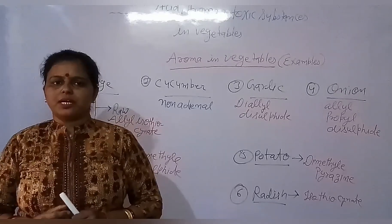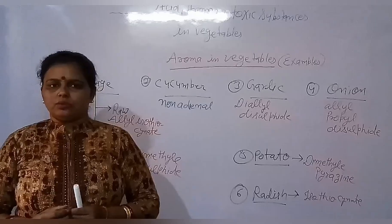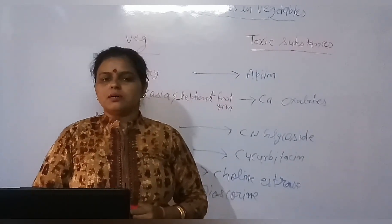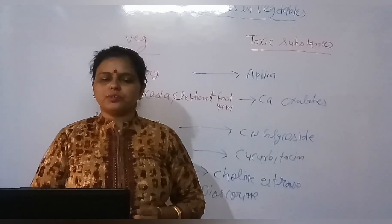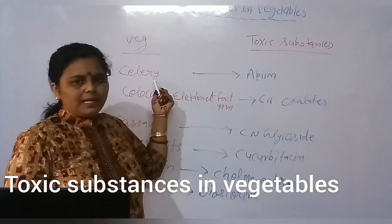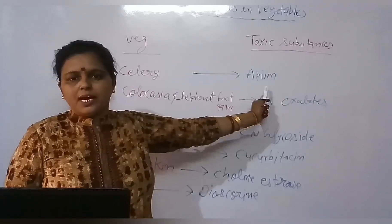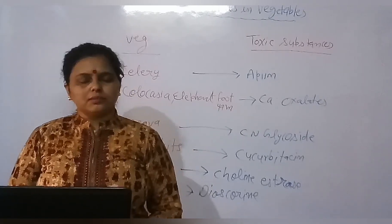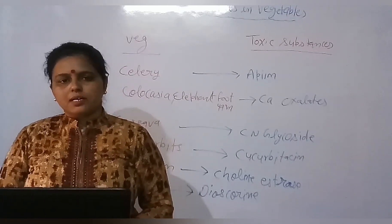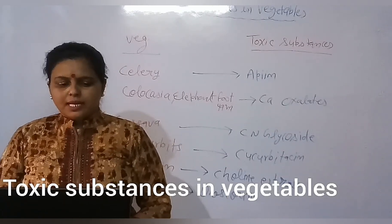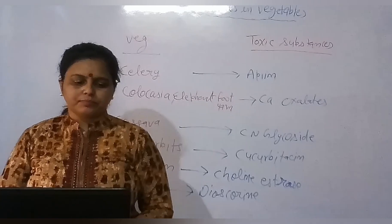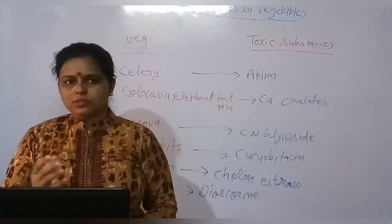Di-allyl Disulfide is a notable vegetable aroma compound. After acid and aroma, the next heading is Toxic Substances Present in Vegetables. These include Calcium Oxalates and Cyanogenic Glycosides.